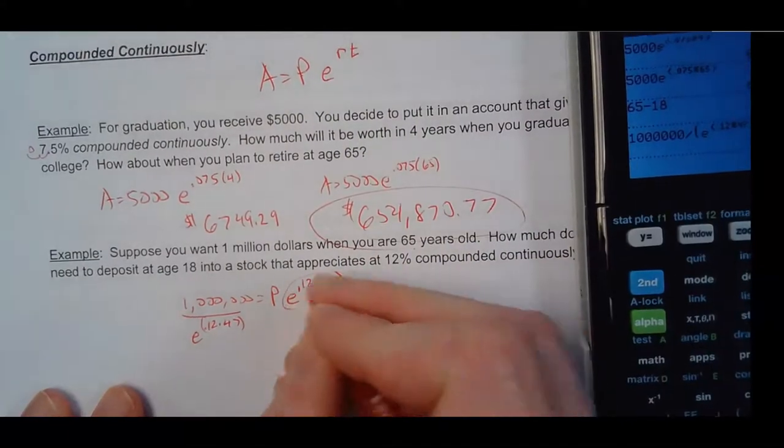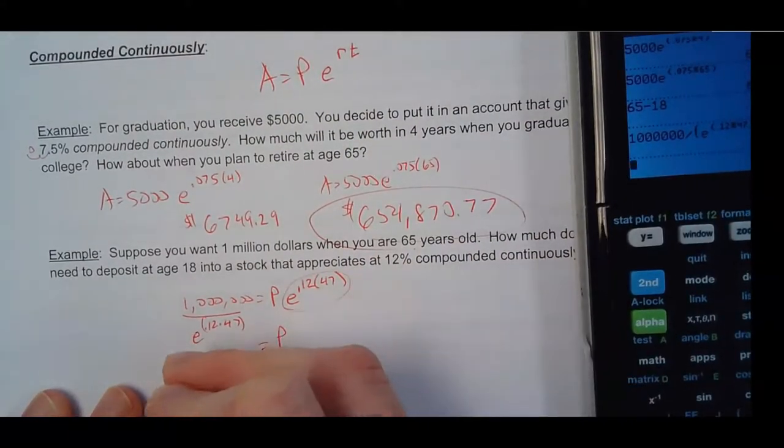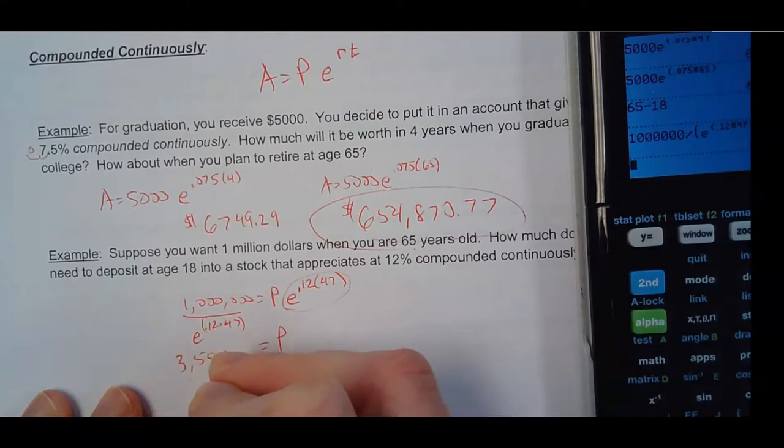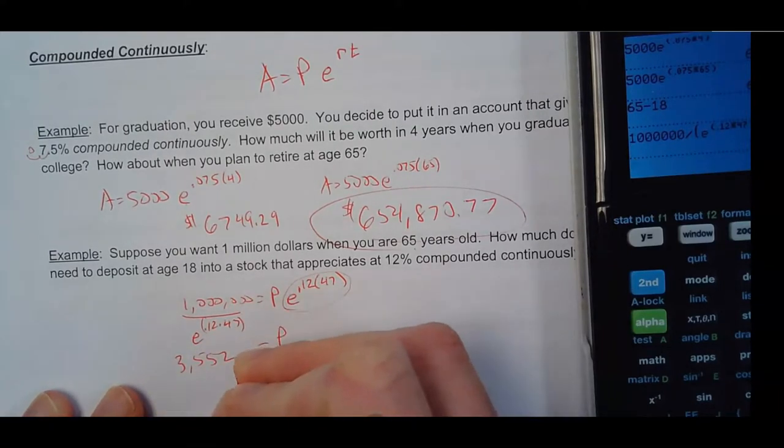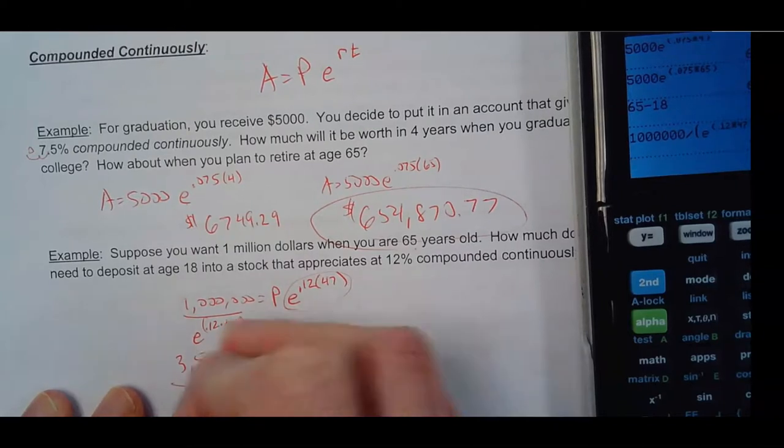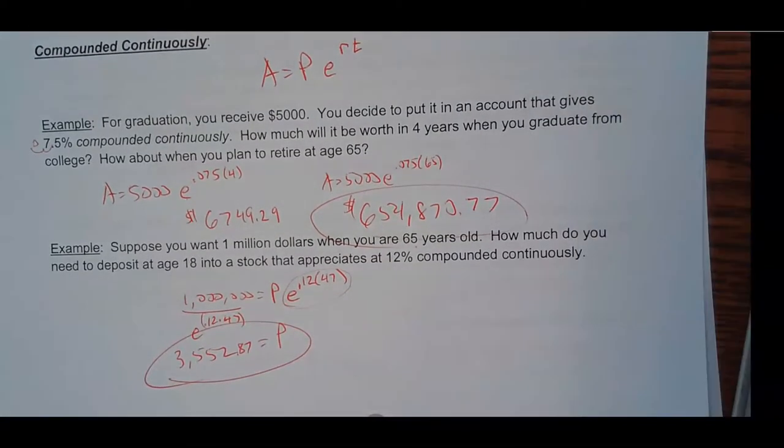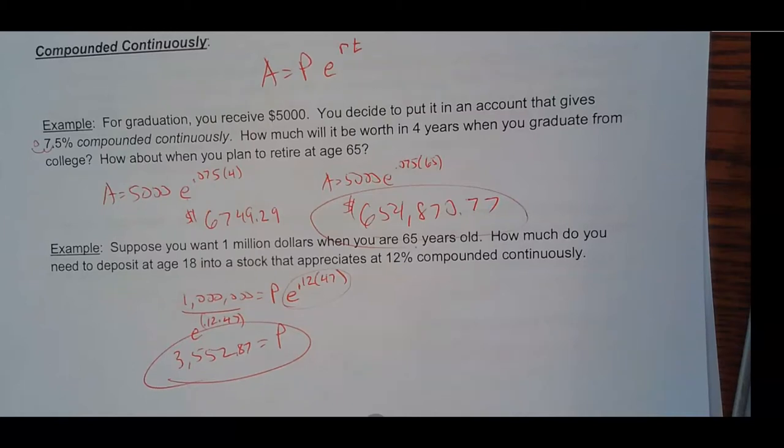And your P, because all that's left here is P, your principal would be $3,552.87. So if you could just somehow get $3,500 about, put in this account, you could be a millionaire when you turn 65 just by not touching that $3,552. So it's pretty crazy how exponential growth works.